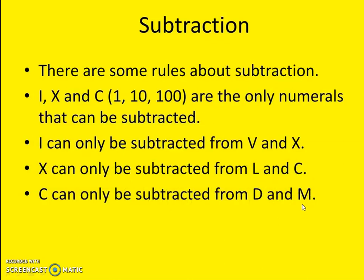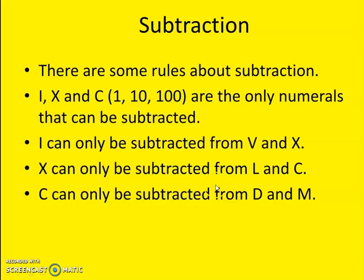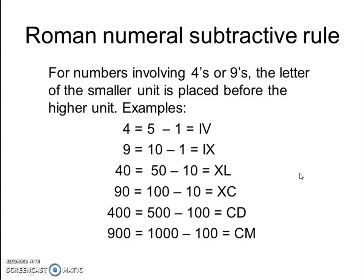So: 4 is IV, which is 5 minus 1 — V on the right-hand side and I on the left. Then 9 is IX, which is 10 minus 1 — X on the right and I on the left. For 40, that is 50 minus 10: write L on the right-hand side and X on the left-hand side. So XL represents 40. X can only be subtracted from L and C, and here we use L, which is 50, so 50 minus 10 gives XL equals 40.